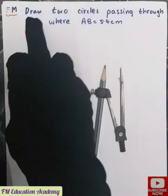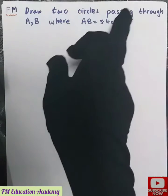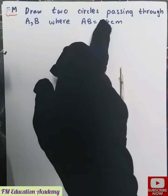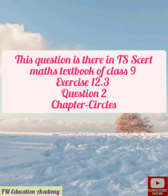In this video lecture we will be seeing a question: draw two circles passing through A, B where AB is equals to 5.4 centimeter. This question is there in TS SCERT textbook of exercise 12.3 question 2.